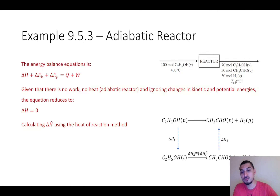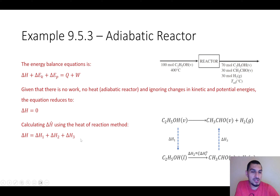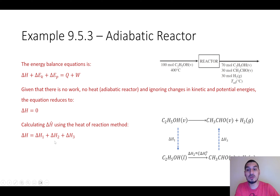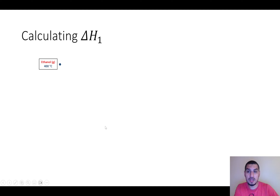Delta H equals delta H1 plus delta H2 plus delta H3. Keep in mind we are trying to find the product temperature. I can calculate delta H1 and delta H2, but delta H3 will be a function of the unknown product temperature T. The summation of these three terms equals zero — that is what we are solving for.